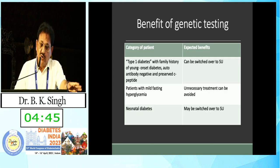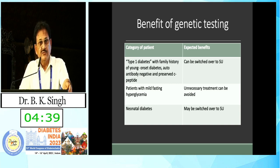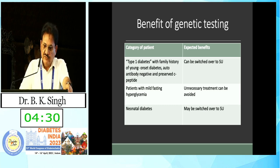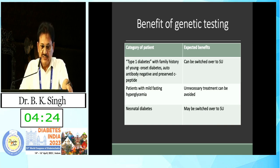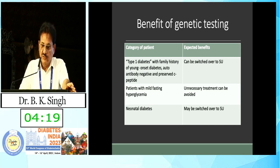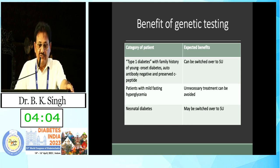If you suspect a case of MODY, genetic testing is the means by which you can confirm the diagnosis. Type 1 diabetes with family history of young-onset diabetes, negative autoantibodies, and preserved C-peptides should raise suspicion, and these patients can be switched to sulfonylurea. Patients with mild fasting hyperglycemia may avoid unnecessary treatment, and neonatal diabetes patients may also be switched to sulfonylurea.